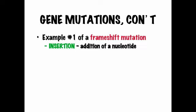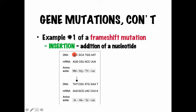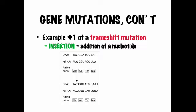There are a couple of examples of frameshift mutations. The first is called insertion, where an extra letter is added — not substituted, but inserted — which bumps everything else down. Looking at the original TAC, GCA, TGG, AAT: if I insert a T after the TA, it bumps everything else down. We were supposed to have methionine, arginine, threonine, and leucine, but now we've got completely different amino acids — it's a totally different protein. You're going to see a lot more effects from a frameshift mutation than from a point mutation.